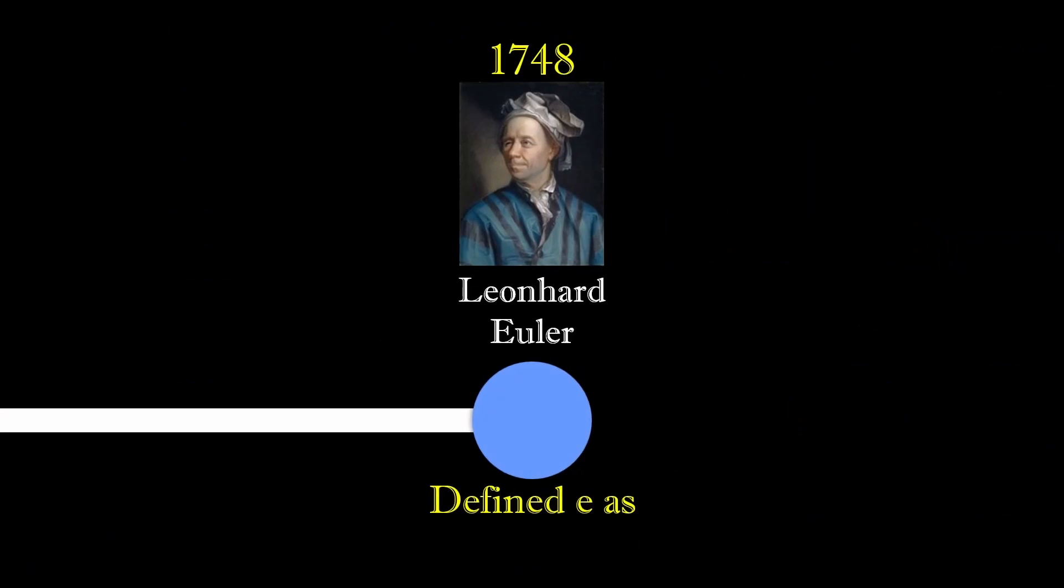But after many years of searching, one Swiss mathematician Leonhard Euler found the answer. And his answer was the irrational number 2.71828182845, or more commonly known as e for Euler's number.